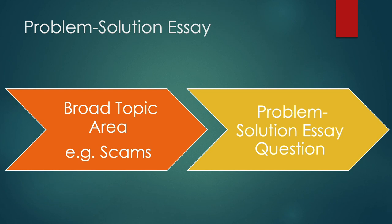Remember, in assessment 1 and assessment 2 in this subject you need to write a problem solution essay. Assessment 1 is the first draft of this essay and assessment 2 is the final draft. You are given the broad topic area — it might be something like food safety or scams — and you need to narrow this topic down into a problem solution essay question.